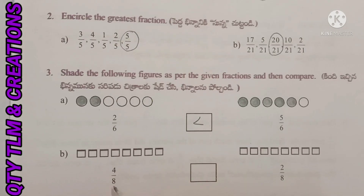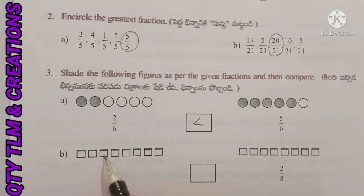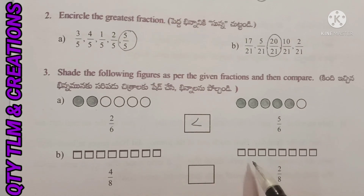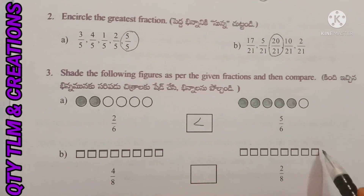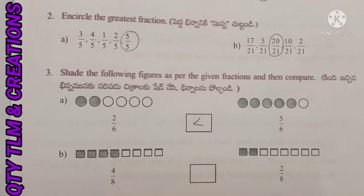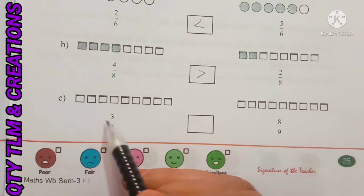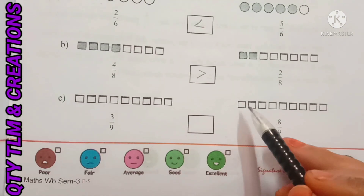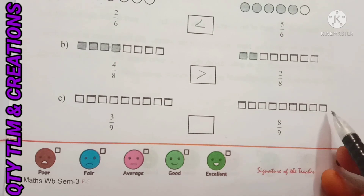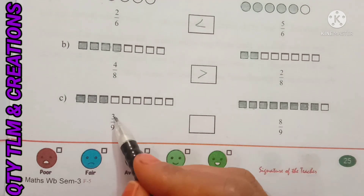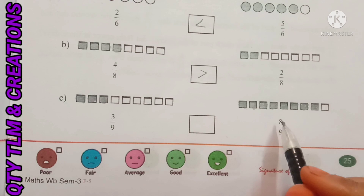Next, B: 4 by 8 — we have to shade 4 squares out of 8 squares. And 2 by 8 — we have to shade 2 squares out of 8 squares. When comparing these two fractions, 4 by 8 is greater than 2 by 8. Next, C: shade 3 squares out of 9, and 8 squares out of 9. When comparing, 3 by 9 is less than 8 by 9.